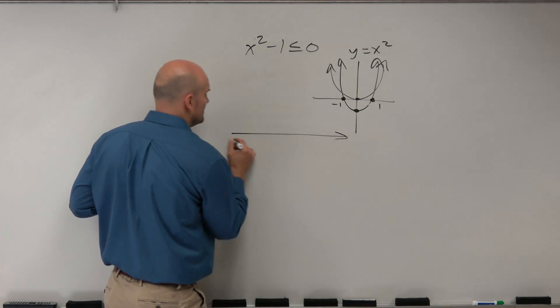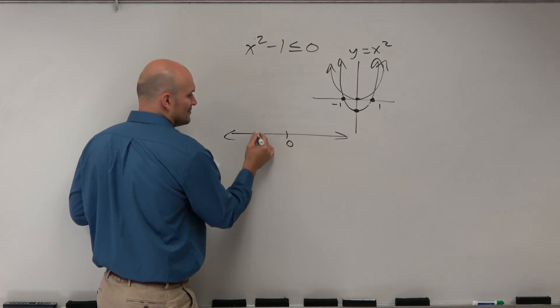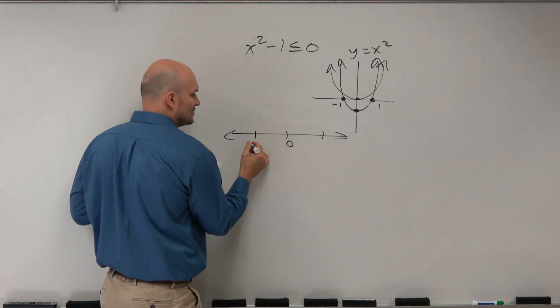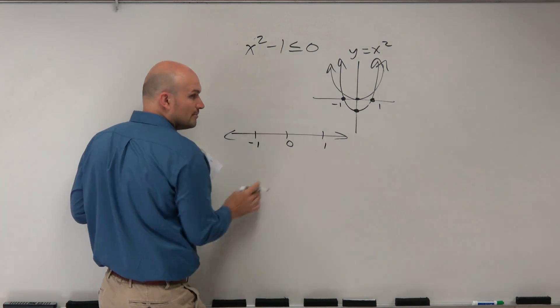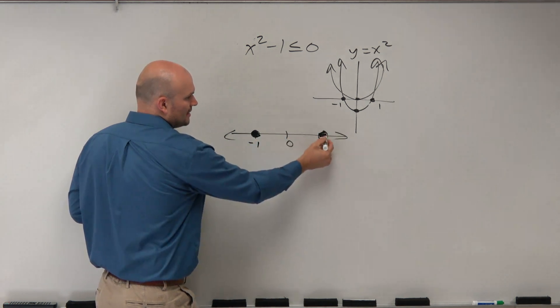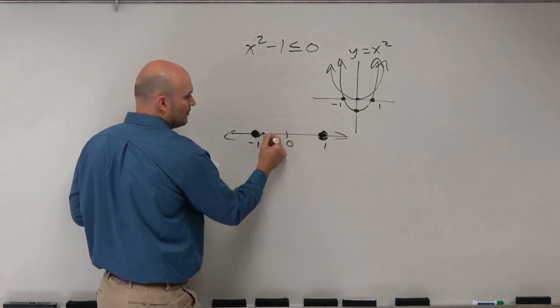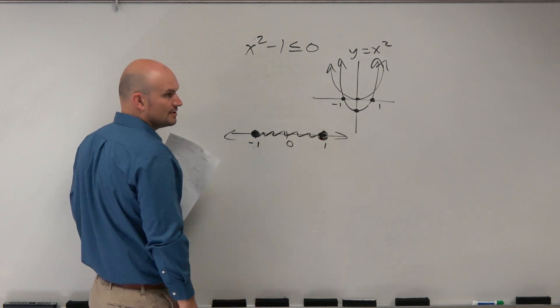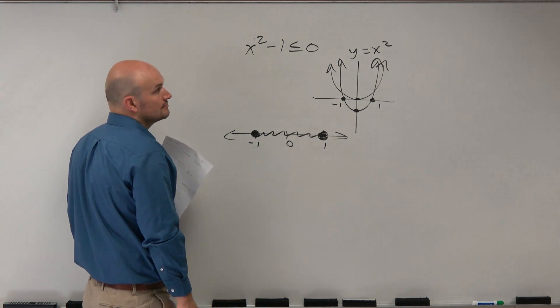So if you were to graph this on an inequality - again guys, this isn't something I actually would really expect you to fully remember from algebra 1. But you could write in the full dot, complete dot. And then it's all numbers between negative 1 and 1 that is less than 0.